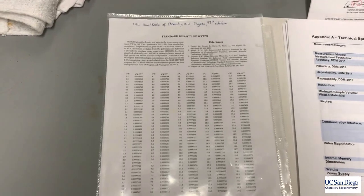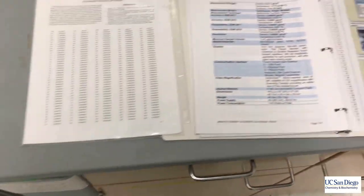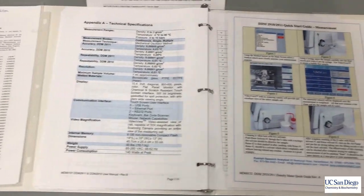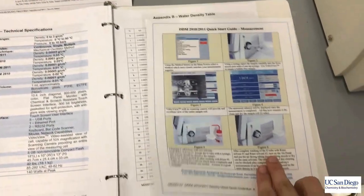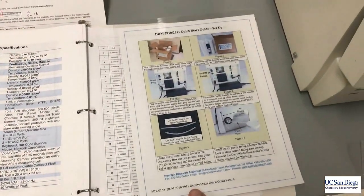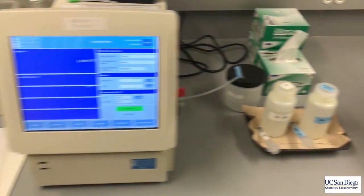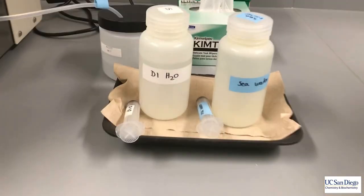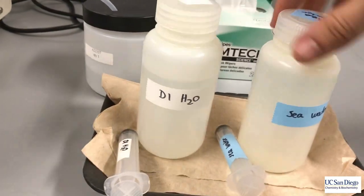We'll also need a CRC handbook list of densities for DI water. Here is some technical data about the instrument as well as written instructions. On the right side of the instrument you'll find DI water and sea water.